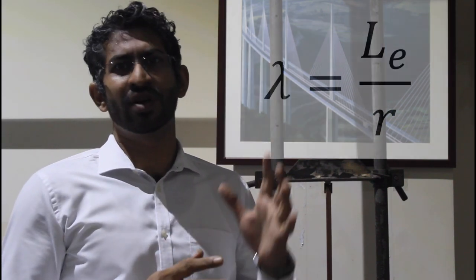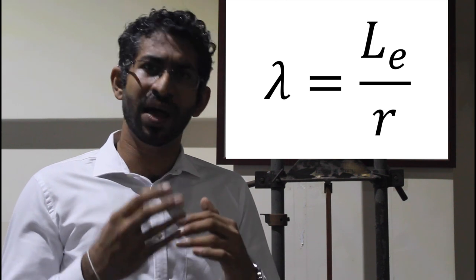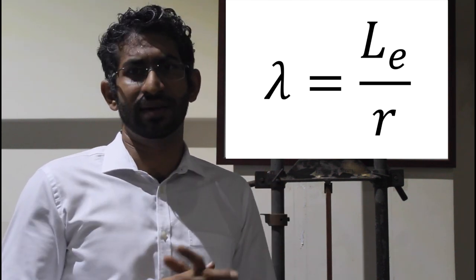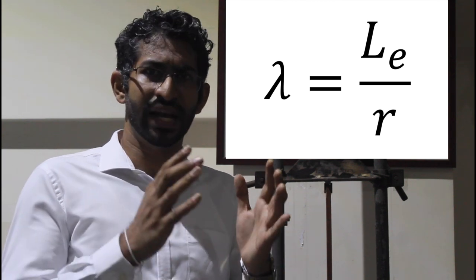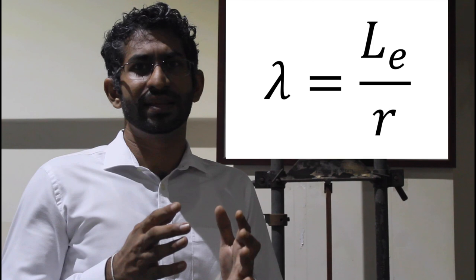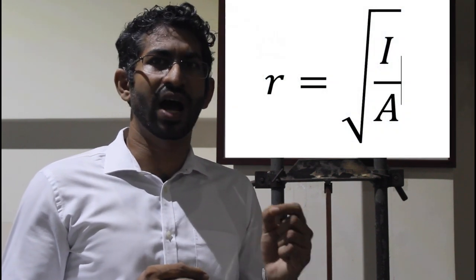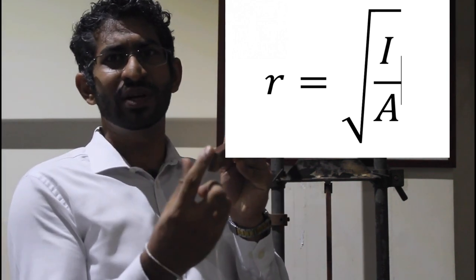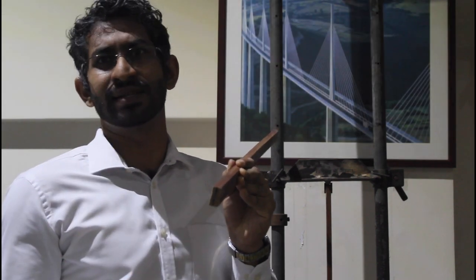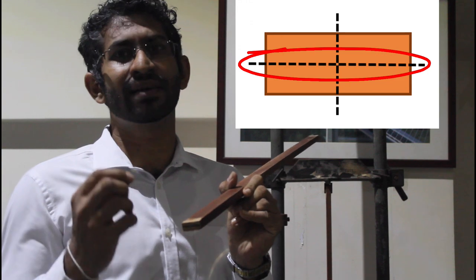Then there is another parameter called slenderness ratio. The slenderness ratio equals the effective length divided by the radius of gyration. The slenderness ratio is a parameter which directly affects buckling. If the slenderness ratio is higher, it means the member is more prone to buckle. If the slenderness ratio is lower, there is a lower tendency to buckle. The radius of gyration is the square root of I divided by the cross-sectional area. Since there are two I values for two directions, there are two radii of gyration — we must take the lowest radius of gyration, as it is the critical value.